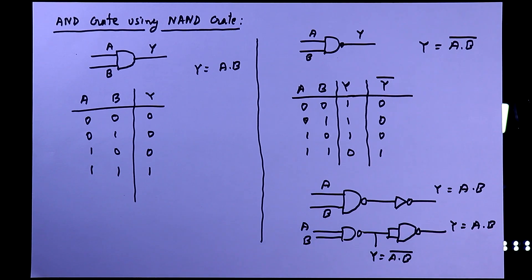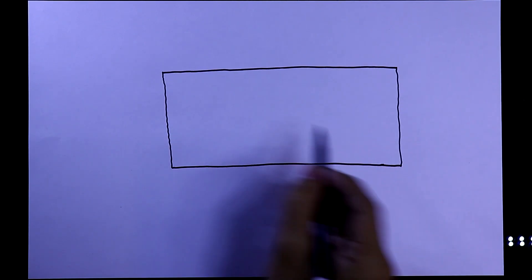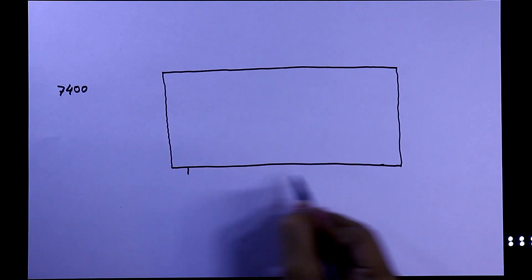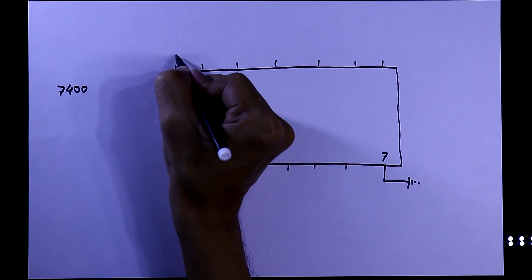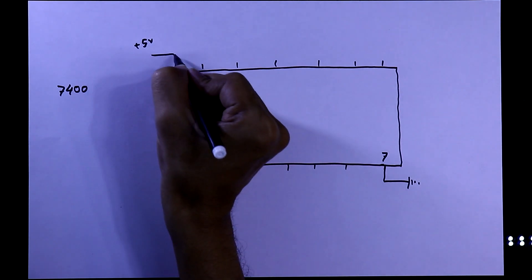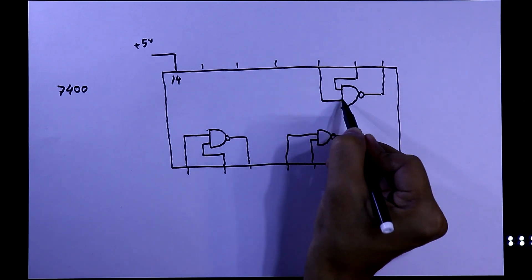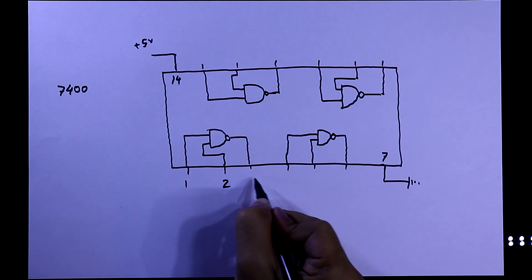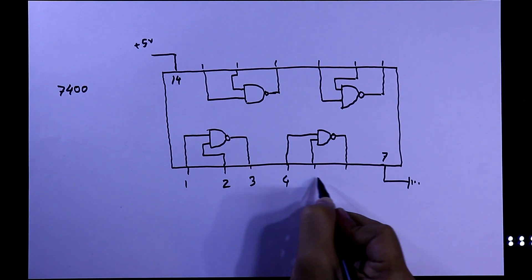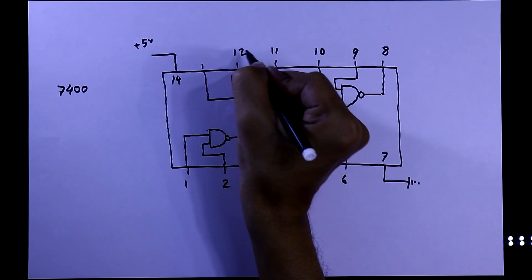Now we will see this on the breadboard. Before that we have to see the pin diagram of the IC 7400 — it is a NAND gate IC. It has 14 pins. Pin number 7 should be connected to ground and pin number 14 should be connected to plus 5 volt. It has 4 NAND gates. Pins 1 and 2 are the inputs and pin 3 is the output of the first NAND gate, and like this you can see the inputs and outputs of the other NAND gates.